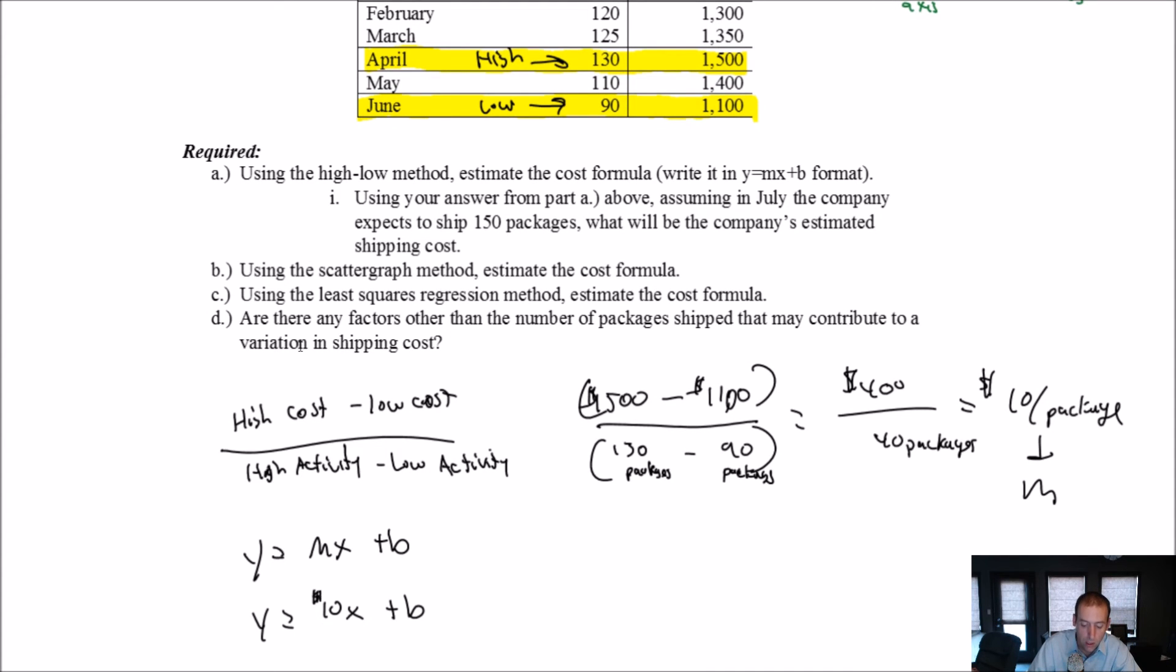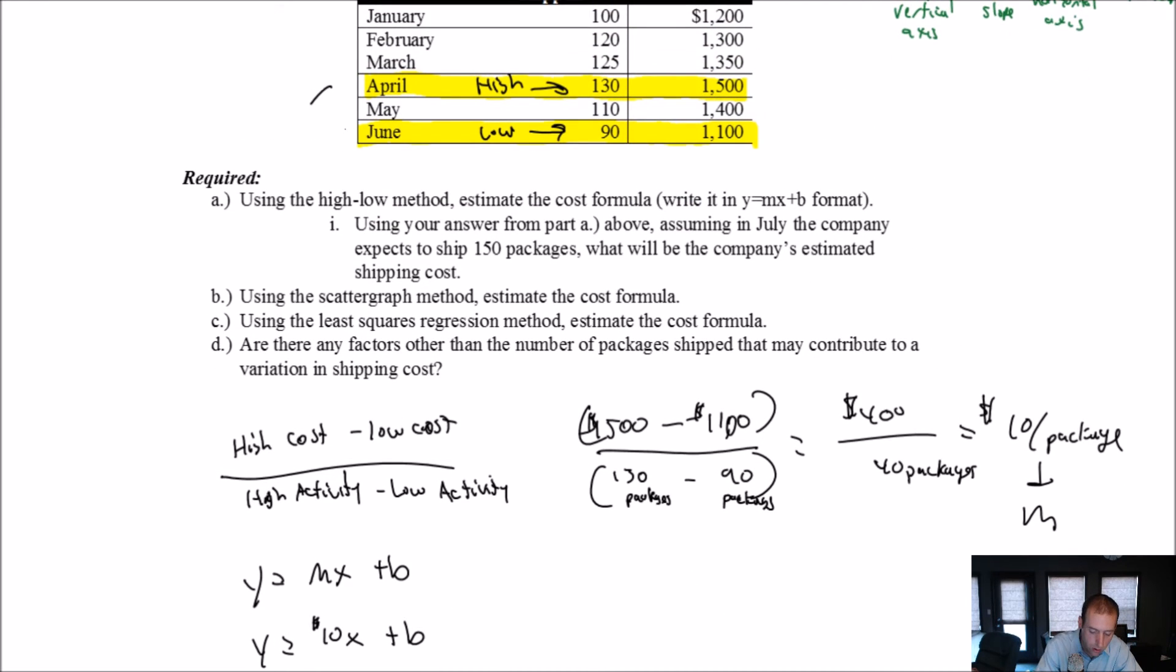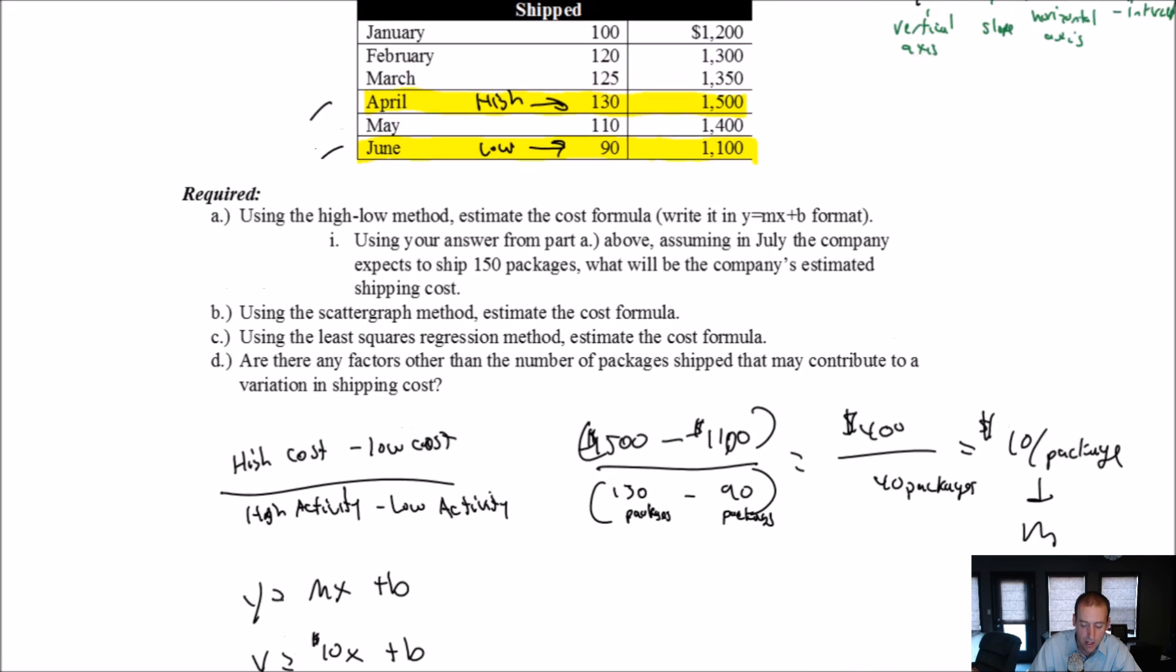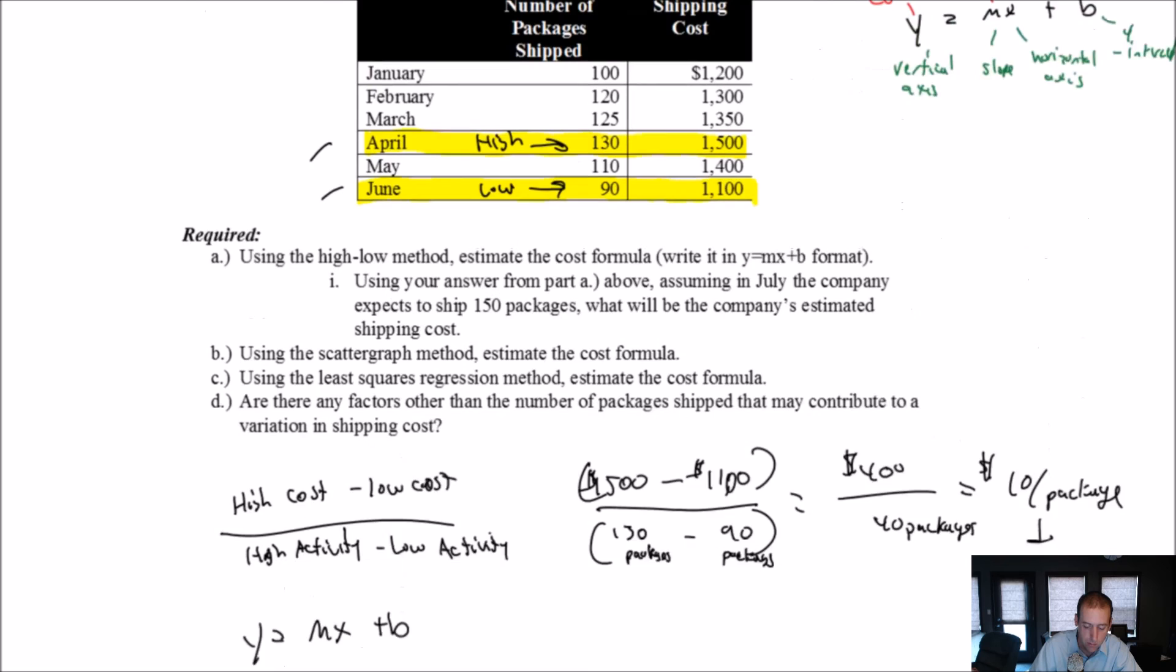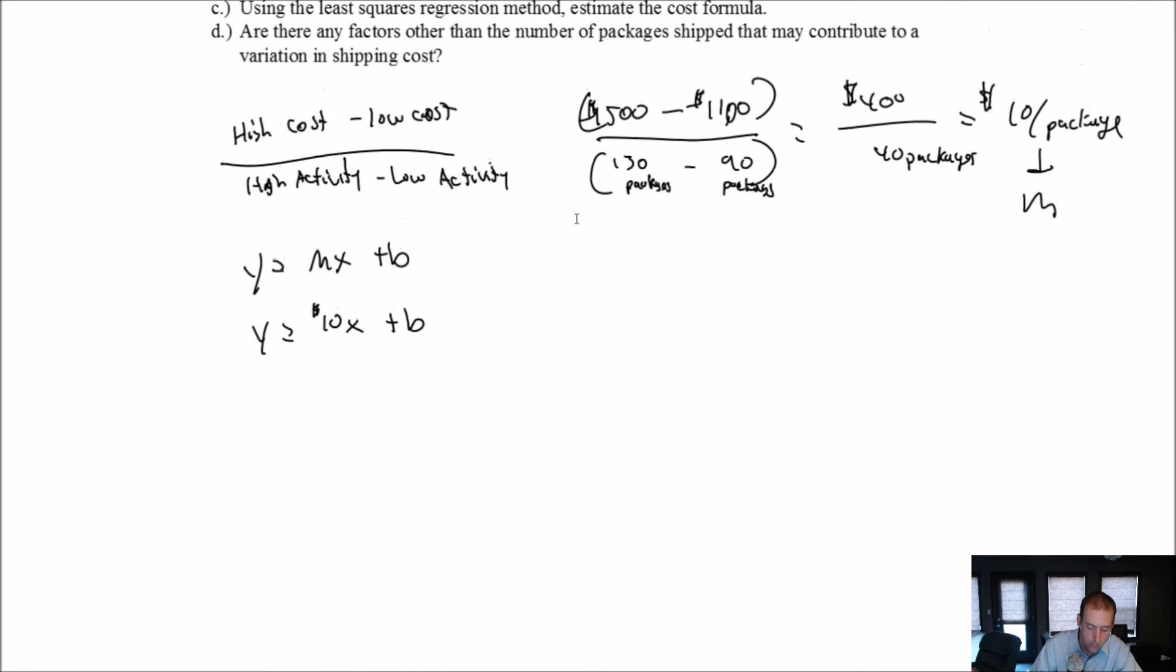So what can I do? I can plug in either April or June data into my formula. I have to use either the high or low, it doesn't matter which. So let's use the high. So I'm going to use April data and I'm going to plug it back into my formula. So again, my formula is Y equals 10X plus B. In April, my Y is $1,500. My X is 130. So in April, my Y is $1,500. So I just replaced Y with $1,500.